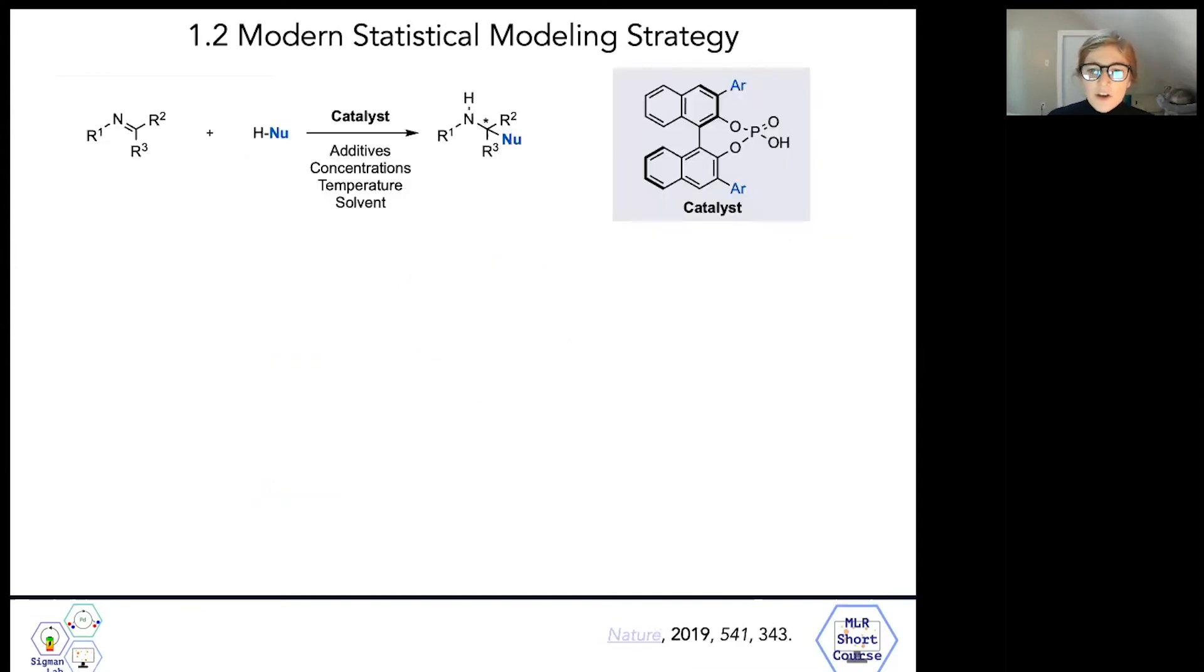The last major advantage of our group's modern statistical modeling strategy compared to traditional linear free energy relationships, is that our models can be used to predict reaction outcomes and mechanisms in addition to just understanding those mechanisms. A particularly compelling example of this came from our group in 2019, when Dr. Jolene Reed mined data from over 350 nucleophilic addition reactions to imines, which were catalyzed by BINOL-derived chiral phosphoric acids.